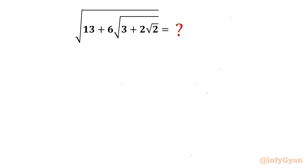Welcome back to Infigyan, my dear friends. Today we are having a pair of problems from Math Olympiad preparation. Question number one is from radical expressions — we have to simplify the square root of 13 plus 6 times square root 3, plus 2 root 2. And the second question is from exponential equations: x raised to x raised to the power 2024, equal to 2024.